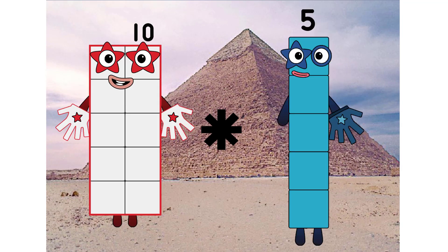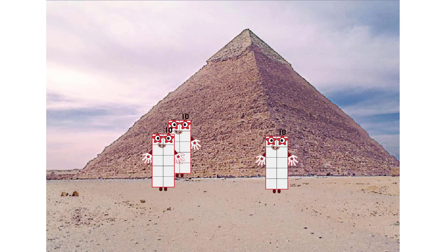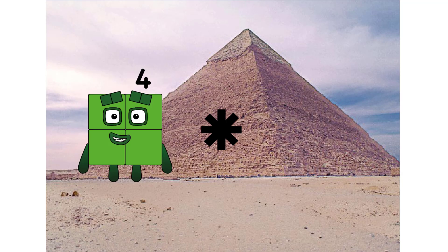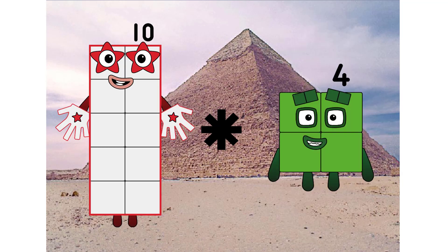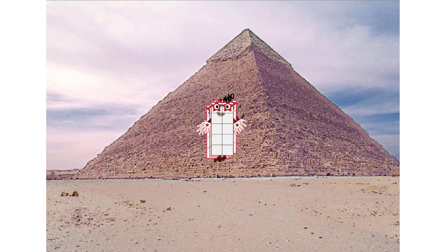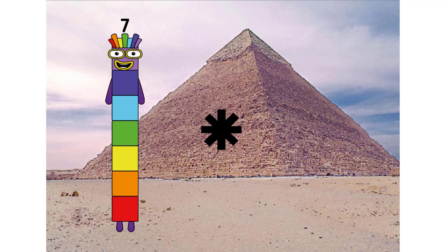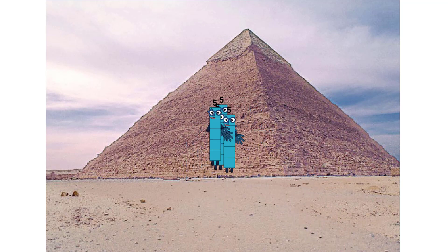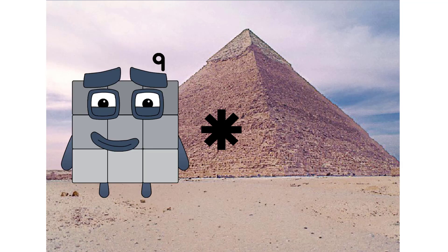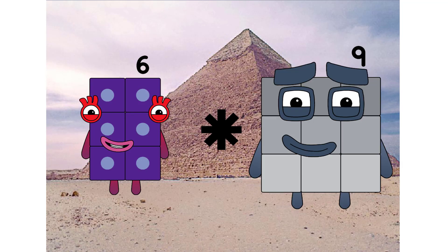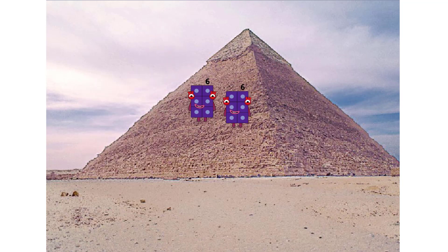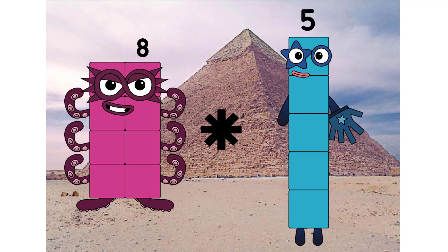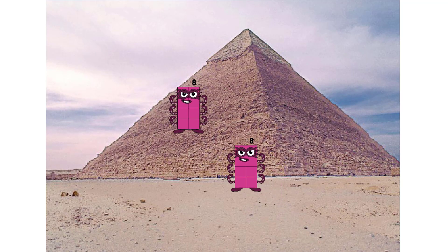9 times 7 equals 20. 10 times 2 equals 23. 10 times 4 equals 44. 5 times 4 equals 24. 6 times 2 equals 14. 8 times — seventy-four. Alright, you are correct.